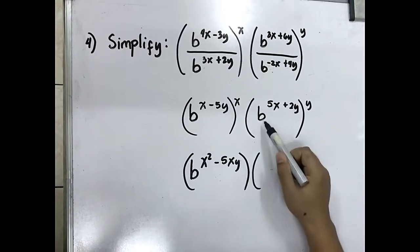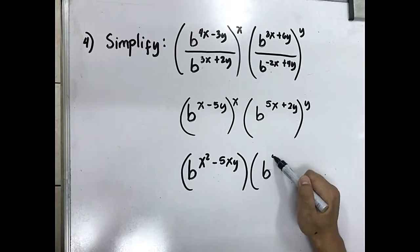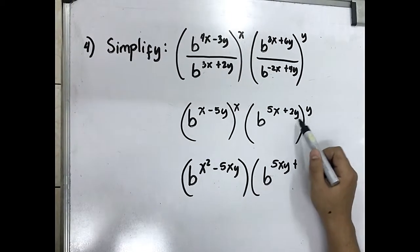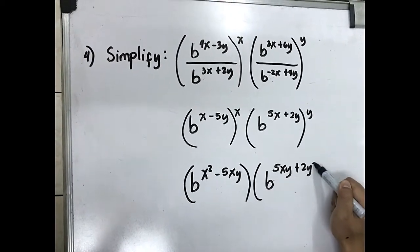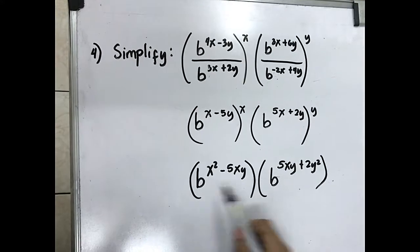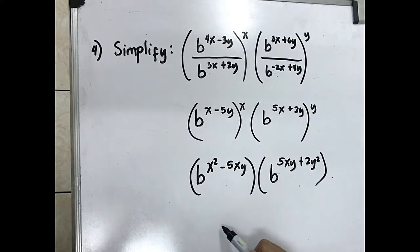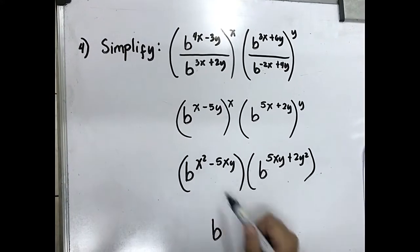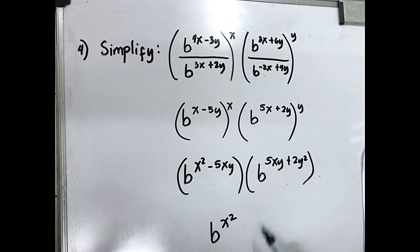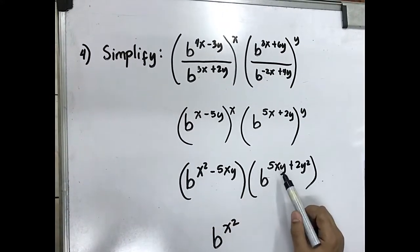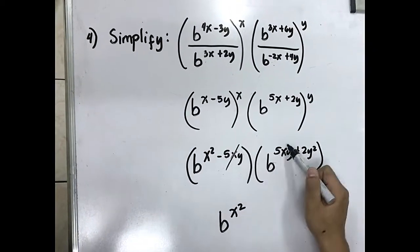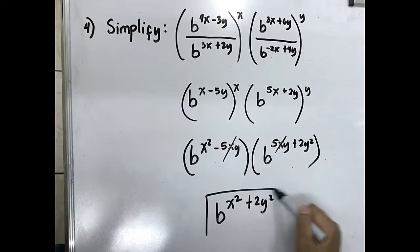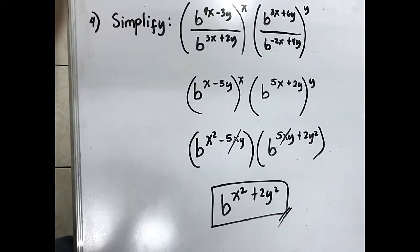5y times y is 5y squared, positive 2y times y is 2y squared. Since we have the same base, copy the base and add the exponents. So x squared, negative 5xy plus 5xy equals 0, then copy positive 2y squared. Final answer.